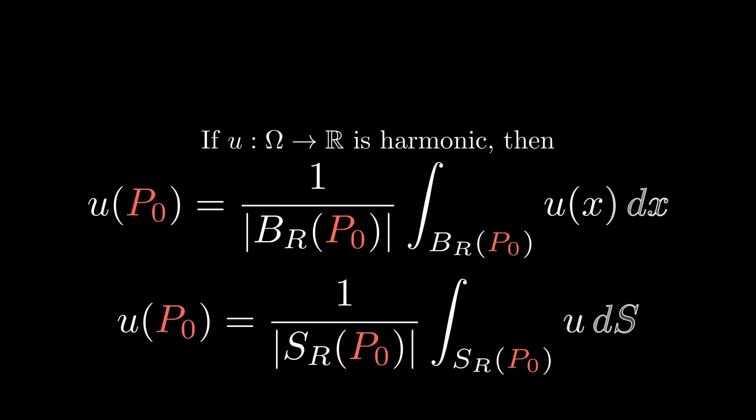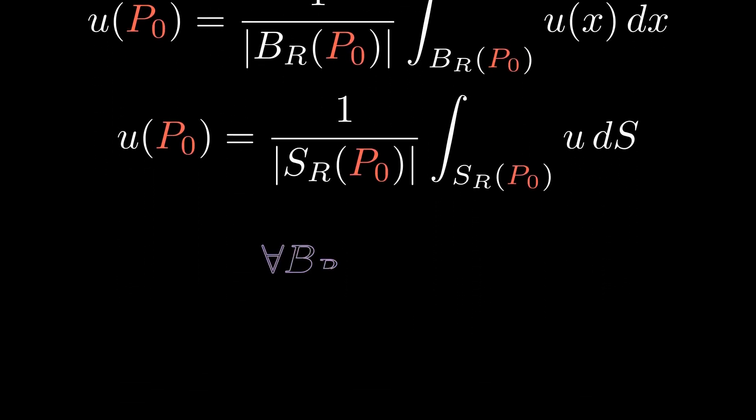Harmonic functions are special because they satisfy an amazing property, the mean value property. In simple terms, the value of u at a point equals the average of u over any ball or any circle centered at that point.